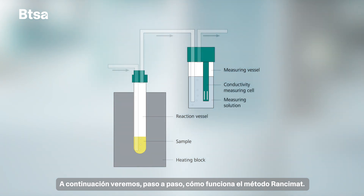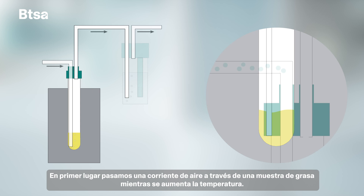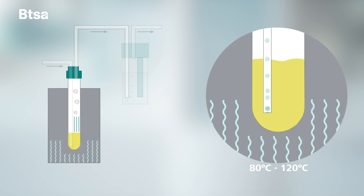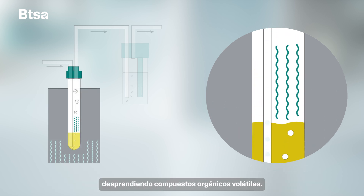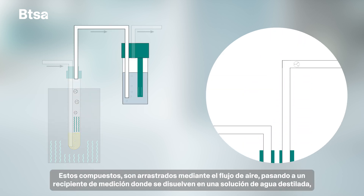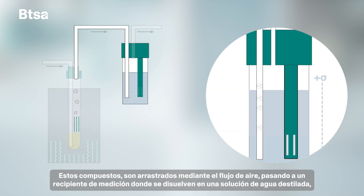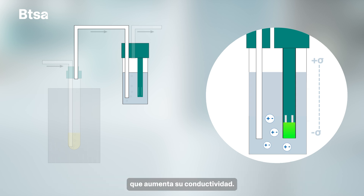Now we will see, step by step, how the Ransomat method works. First, we pass a constant airflow through a sample of fat while the temperature is increased. This causes the oxidation of the sample, releasing volatile organic compounds. These compounds are dragged by the airflow, passing to a measuring vessel where they dissolve in a solution of distilled water, which increases its conductivity.